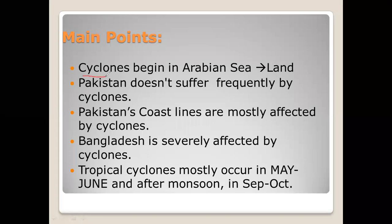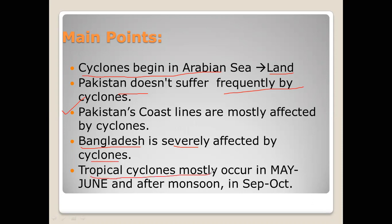Now the main points: cyclones begin in the Arabian Sea and come towards land. Pakistan does not suffer frequently from cyclones — only Pakistan's coastlines are occasionally affected. Bangladesh is severely suffered by cyclones. Tropical cyclones mostly occur in May–June and after monsoon in September to October.